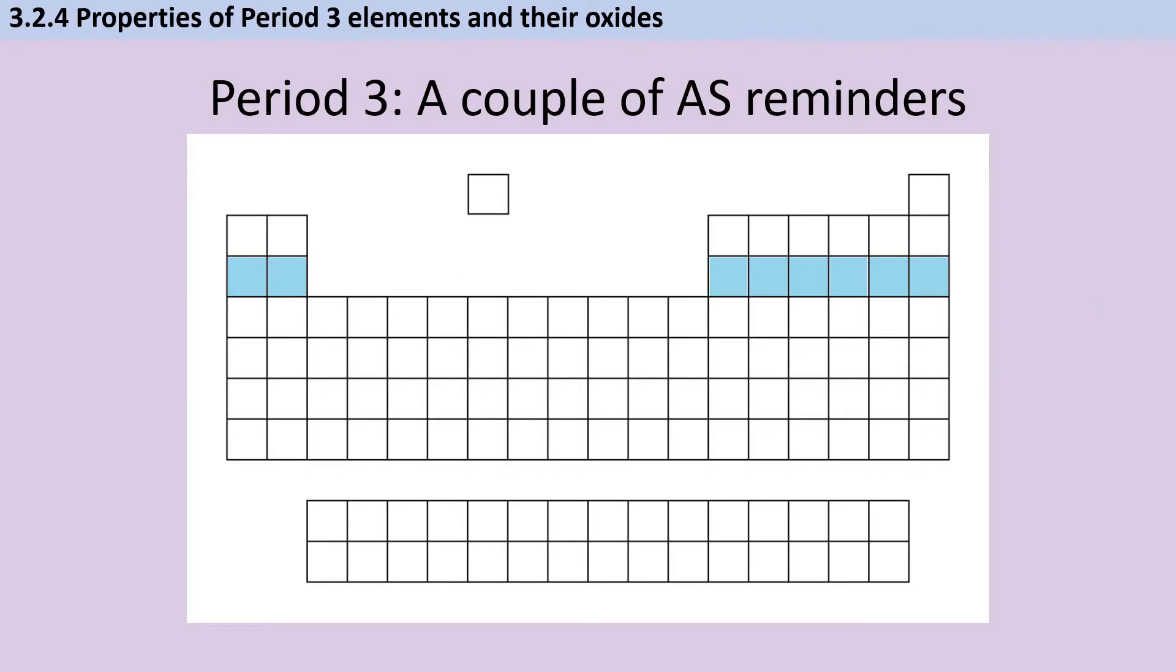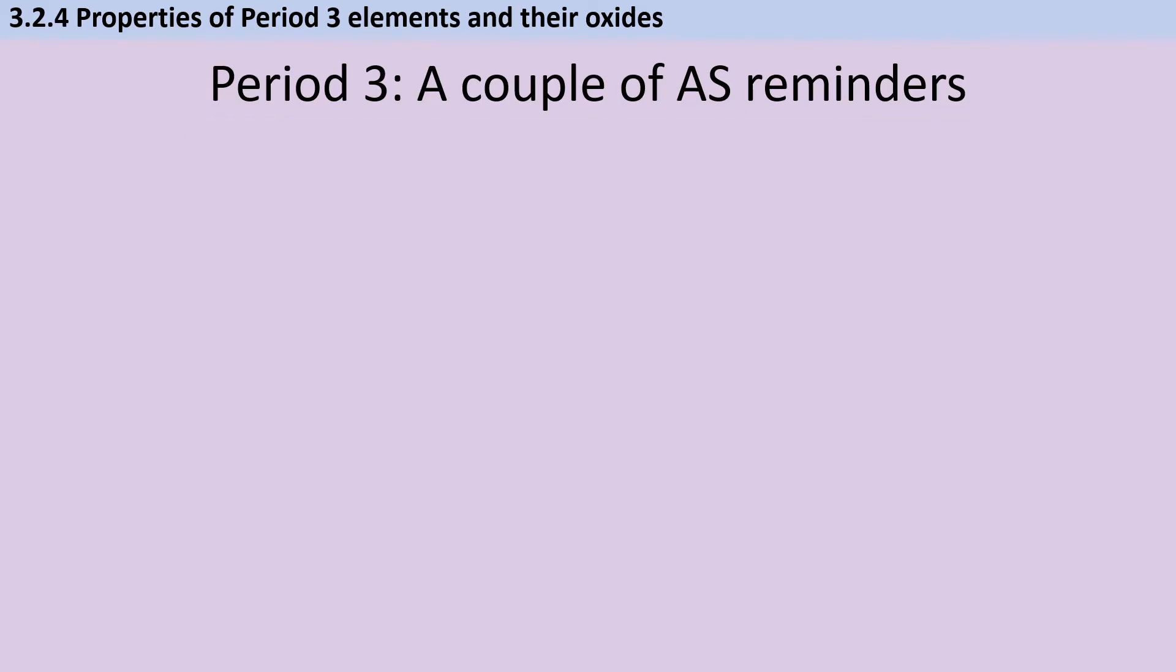Period 3 are the third row of the periodic table, and the eight elements listed in this period all have three shells, so their electron configuration ends with either 3s or 3p. The general trend across the period is that atomic radius decreases because all the atoms have the same number of shells and therefore shielding, but there's a higher nuclear charge and therefore a stronger electrostatic attraction between the positive nucleus and the negative electrons in the outer shell.